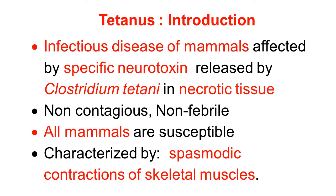Tetanus is an infectious disease of all mammals. It is caused by a specific neurotoxin produced by the organism Clostridium tetani in necrotic tissue. Though this is an infectious disease, it is a non-contagious disease. It is non-febrile — there is no fever. All mammals are susceptible. The disease is characterized by spasmodic contraction of skeletal muscles of the whole body.